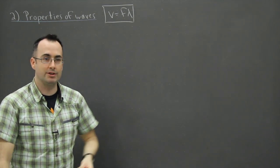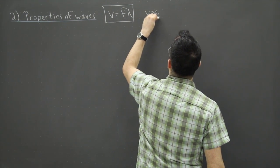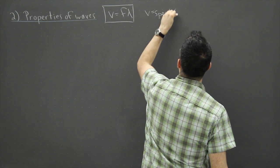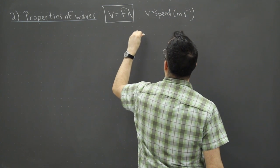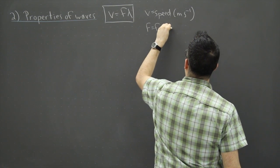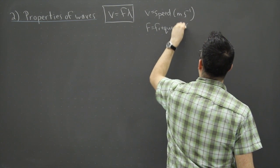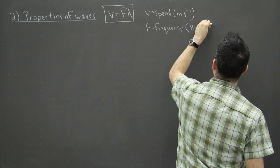Some people call this the wave equation. V is the speed of the wave in meters per second. We have F which is the frequency, and that has units of Hertz or seconds to the negative one.